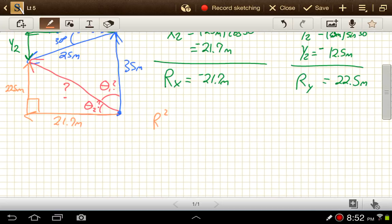r squared, we call this r. r squared is equal to negative 21.7 meters squared plus 22.5 meters squared. So r squared is equal to 21.7 squared plus 22.5 squared. So r then is equal to 31.3 meters.